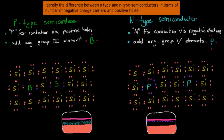This stop point is quite similar to the last stop point. I'll read the actual stop point first in this video. It says: identify the difference between P-type and N-type semiconductors in terms of number of negative charge carriers and positive holes. So we have to talk about how many negative charge carriers and positive holes P-type and N-type semiconductors overall have, generally speaking — which one has more positive holes, which one has more negative charge carriers?